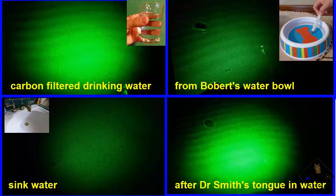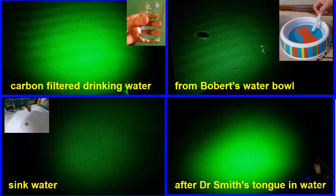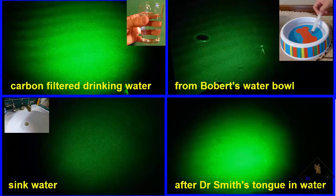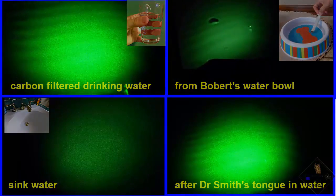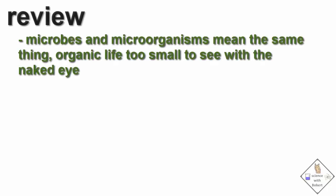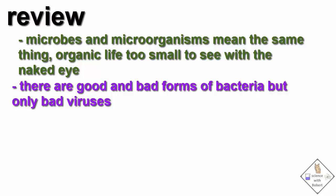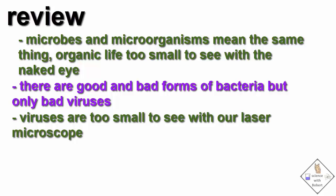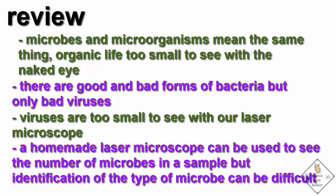Possibilities are endless. Go ahead and build a laser microscope so you can find out what's in your water. Microbes and microorganisms mean the same thing — organic life too small to see with the naked eye. There are good and bad forms of bacteria, but only bad viruses. Viruses are too small to see with our laser microscope. A laser microscope can be used to see the number of microbes in a sample, but identification of the type of microbe is difficult.